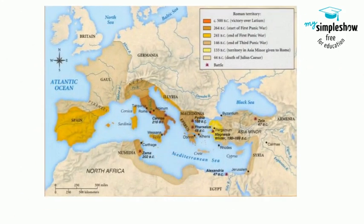Rome had moved into the Greek empires of Alexander and absorbed them as well, becoming rulers of Egypt, Mesopotamia, and North Africa. Also becoming masters of the Mediterranean Sea and naming it Mare Nostrum — our sea. They were opening up trade with India and China beyond, and they were exploring and conquering the tribes of Northern Europe into England.